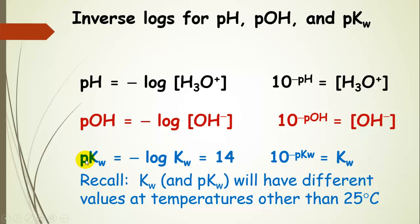We can do the same thing with pKW. Taking the negative log of KW gives 14 for pure water at 25 degrees C. If we have pKW and want KW, we take 10 to the negative pKW. This is useful at temperatures other than 25 degrees C, where we can generate KW from pKW.